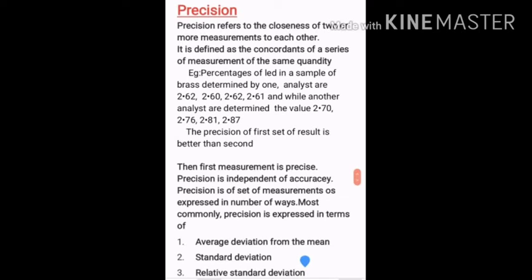For example, the percentage of lead in a sample of brass is determined by two analysts. The first analyst reports: 2.62, 2.60, 2.62, and 2.61. The second analyst reports: 2.70, 2.76, 2.81, and 2.87. The precision of the first set of results is better than the second, because the first results are close to each other. Therefore, the first measurement is precise.